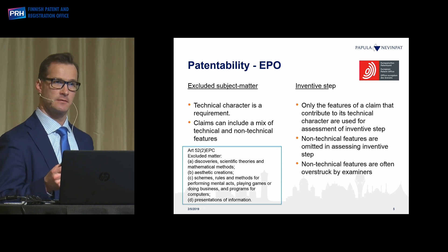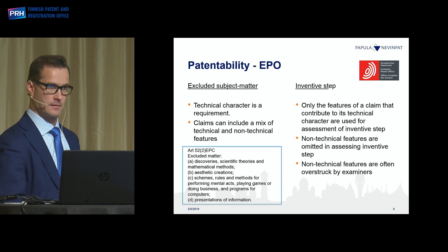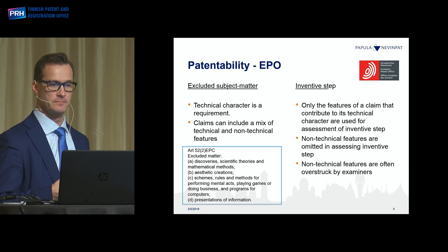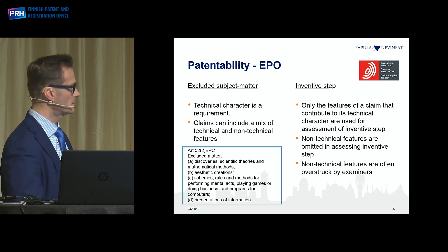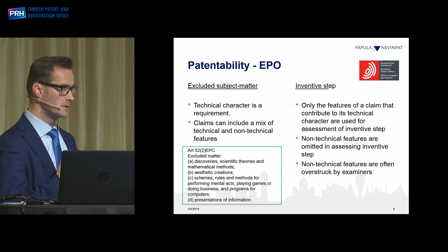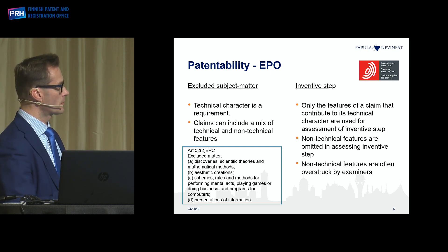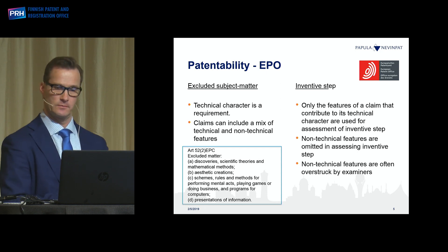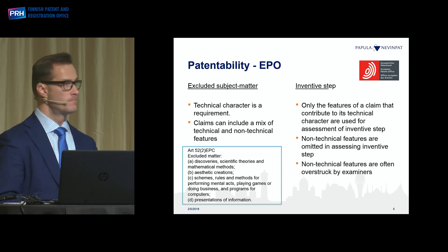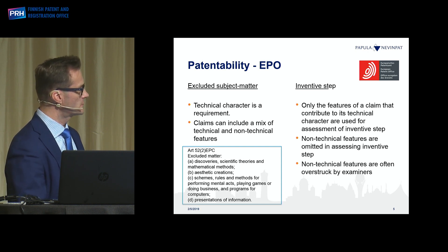But you can have a mix of technical and non-technical features. Those listed here are typically considered by examiners as non-technical. For AI, the challenges are the exclusion of mathematical methods, exclusion of programs for computers, and often whether the invention is a mental act or method of doing business. This first hurdle is easy to overcome — you can get in technical elements. But the more difficult one is the second hurdle: only features that contribute to the technical character of the invention are used for assessing inventive step.